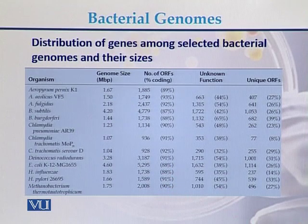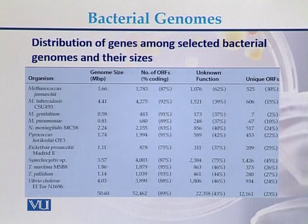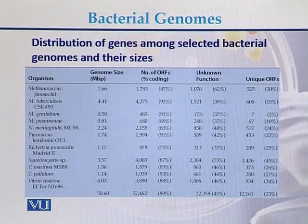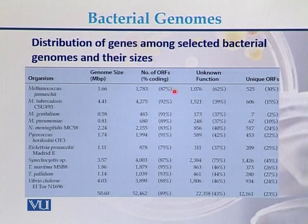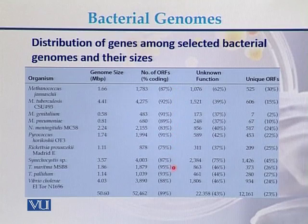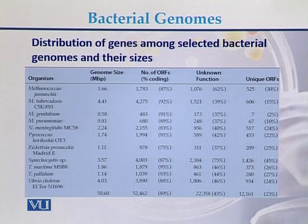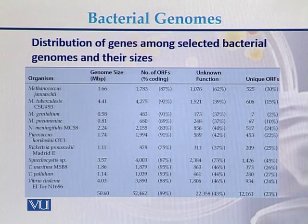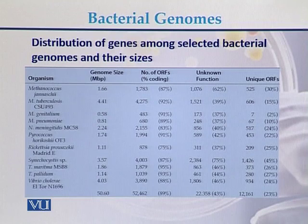In the case of prokaryotes, there is very little DNA sequence that is not coding in nature. In another example about the distribution of genes among selected bacterial genomes and their size, the coding DNA sequence ranges from 87% up to a maximum of 95%, then 89%. This shows the size of the genomes, the number of genes, and what percentage of the genome is coding for specific RNA genes or polypeptide-producing genes.